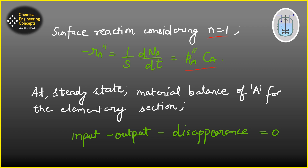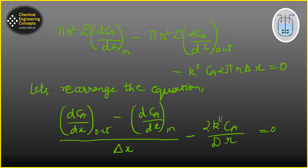At steady state, we write the material balance of reactant A for that elementary section. This tells us the flow of material into and out of any section of the pore. At steady state: input minus output equals disappearance. This is our basic material balance equation.